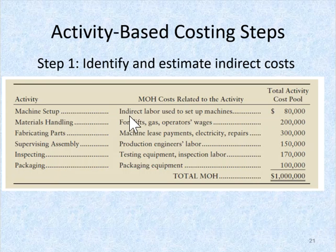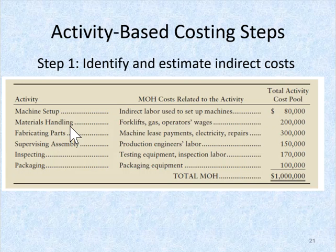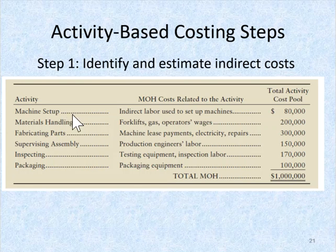Machine setup costs would primarily include the indirect labor used to get the machines going. Materials handling — moving materials from one location to another — would include forklifts, gas, and operator wages, all associated with materials handling.